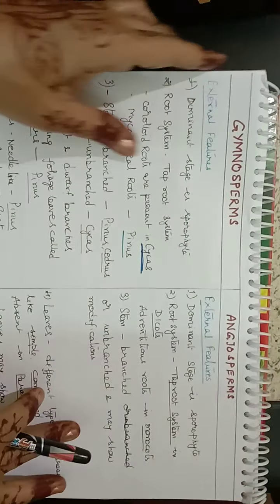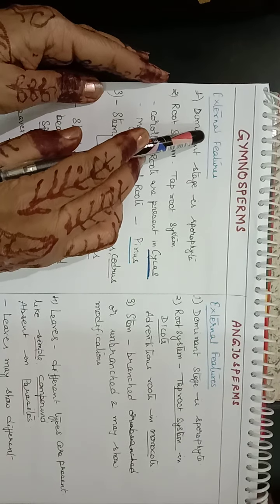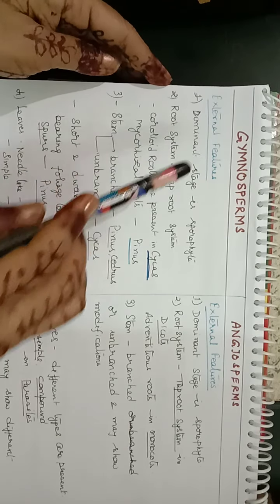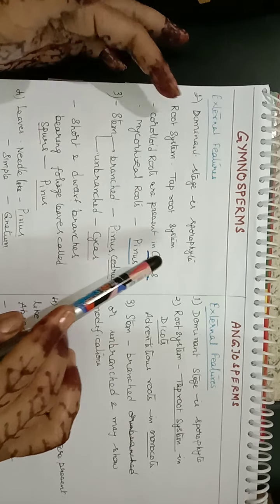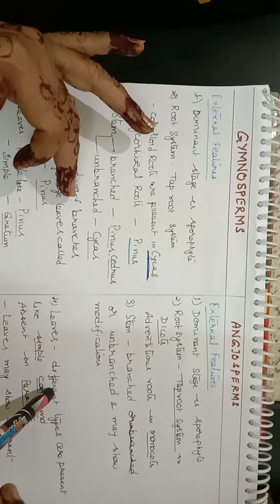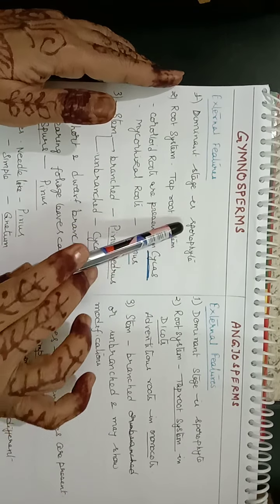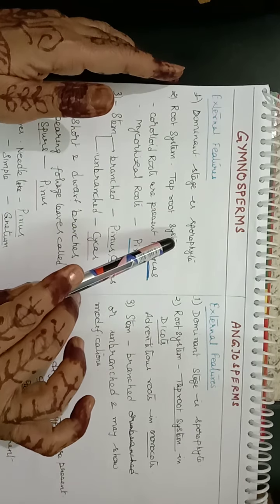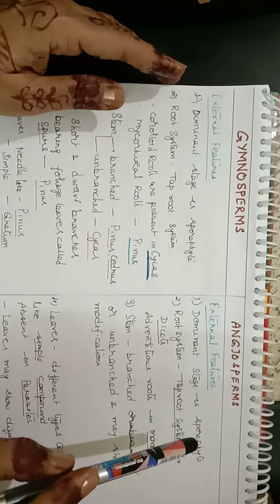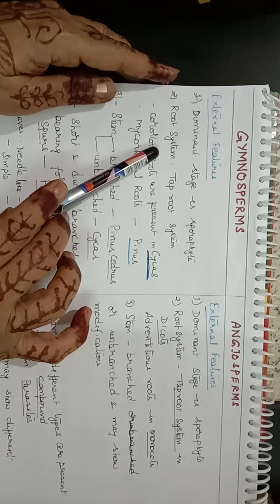Now the next point of comparison is external features — root system, stem, and leaves in both gymnosperms and angiosperms. The dominant stage in both gymnosperms and angiosperms is the sporophyte. The sporophyte is a diploid stage and it forms spores.